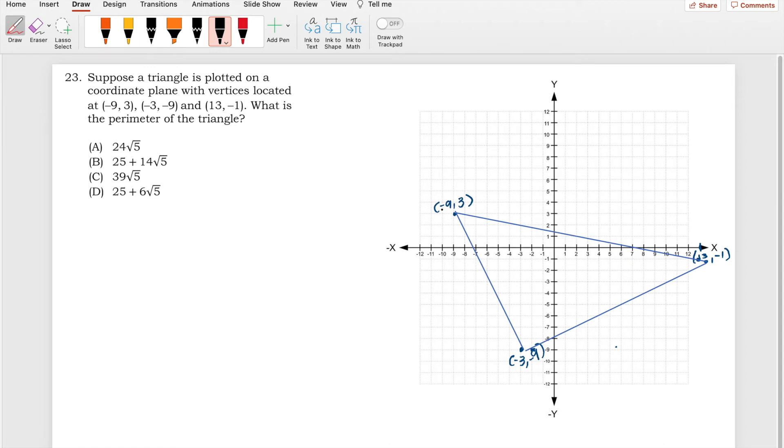So we have here problem number 23. Suppose a triangle is plotted on a coordinate plane with vertices located at (-9, 3), (13, -1), and (-3, -9). We will use the distance formula that is given with this formula.